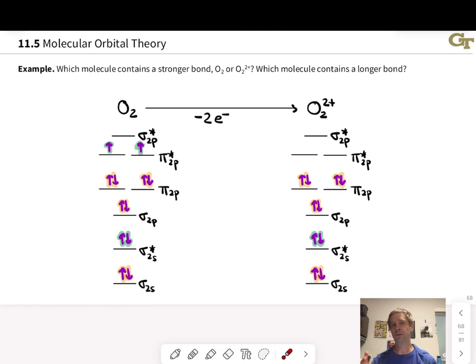Now to think about bond strength and bond length, let's calculate the bond order in each of these two molecules. In the neutral O2 molecule, and we've done this before, we've got eight bonding electrons, we've got four antibonding electrons divided by two. The bond order in neutral O2 is 2.